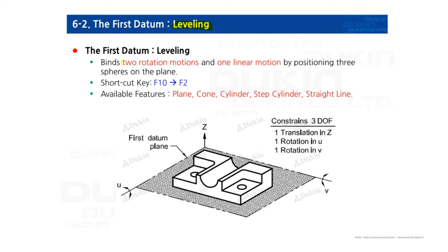Leveling constrains two rotational motions and one linear motion. It constrains two rotational motions, so it determines the parts degrees of freedom overall.